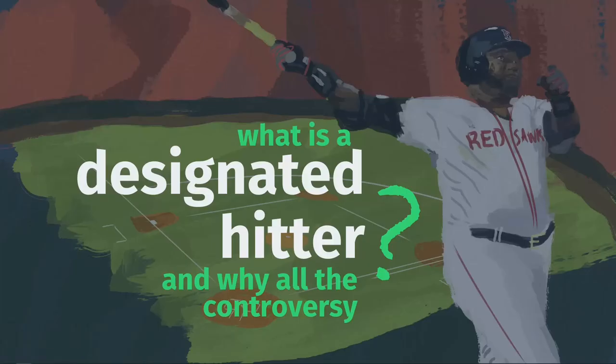Major League Baseball is somewhat unique among sports leagues in that its teams are divided into two groups that actually play under different rules, at least with regards to one position, at least for now, although this may change in the very near future. There are a lot of arguments over this topic which go back decades, but I'm certain we'll be able to settle this debate by the end of this video.